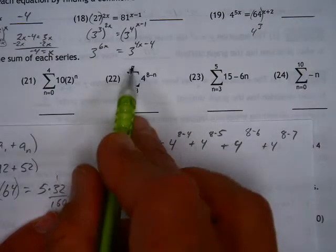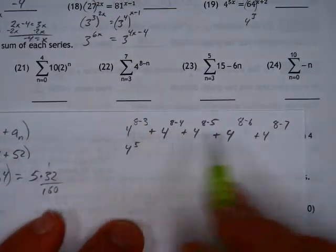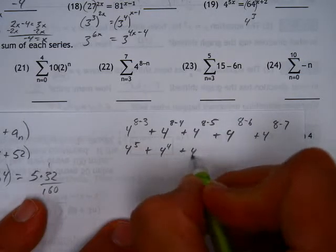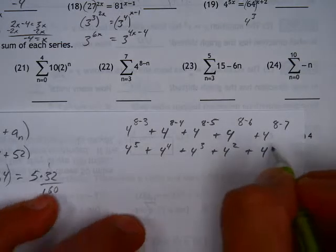We stop there because of that 7 up there. So we've got to find out what all these are and then add them together. This is 4 to the 4th, 4 to the 3rd, 4 to the 2nd, and just 4.